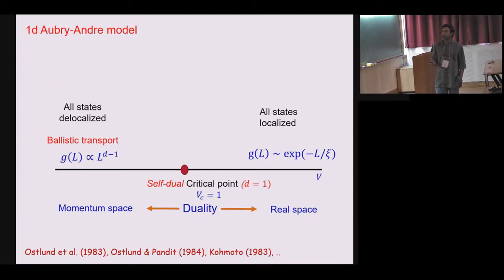So now again in the 1D Aubry-Andre model many things are known. What was found that essentially again in 1D Aubry-Andre model you have a transition from a delocalized phase to localized phase. And the delocalized phase however is ballistic. So the transport will be L to the power D minus 1, not D minus 2.